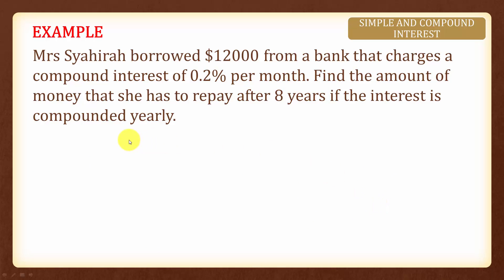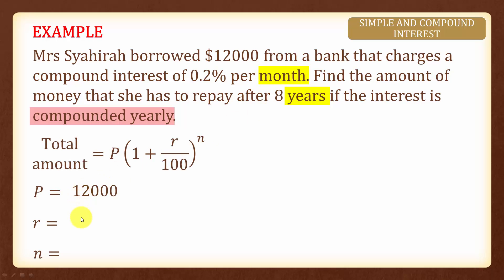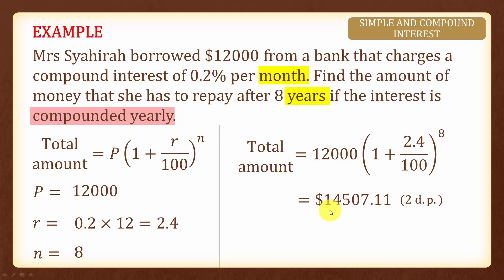Here we will compound the interest yearly, and the compound interest is zero point two percent per month. We are asked to find the amount she has to repay after eight years. Since it is compounded yearly, we need to find the compound interest per year. The principal is twelve thousand dollars. Zero point two percent per month becomes zero point two times twelve, which is two point four percent per year. Since it is compounded yearly, eight years means we compound it eight times. Therefore the total amount is calculated from these values.